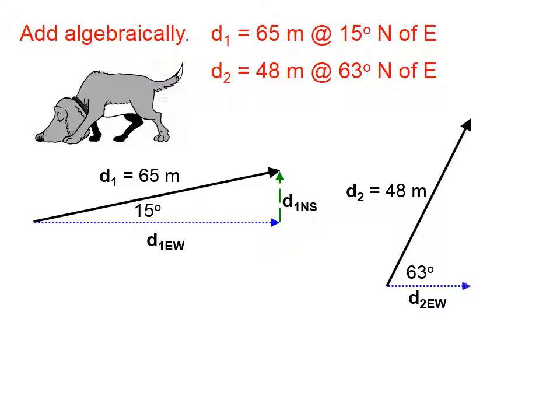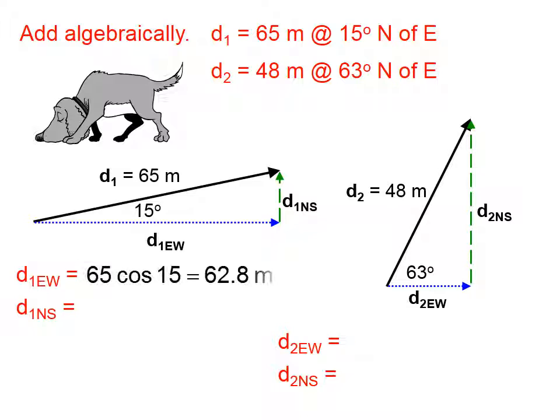We're going to find the components of those vectors - the horizontal component, or the east-west component for each of these, and the north-south component for each of these. We're going to do that by using the length of the given vector and sine or cosine as appropriate. To find the length of this blue vector here, we're going to take 65 times the cosine of 15, which is 62.8 meters, and it's that way. We're going to find the length of this green vector, the north-south component, by using the sine of 15. That's 16.8 meters north.